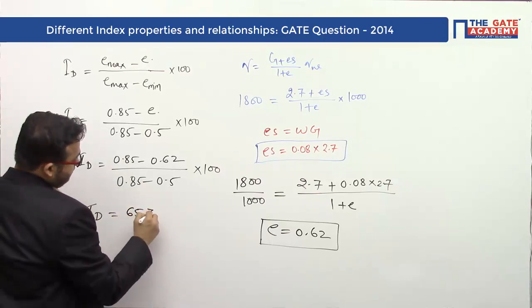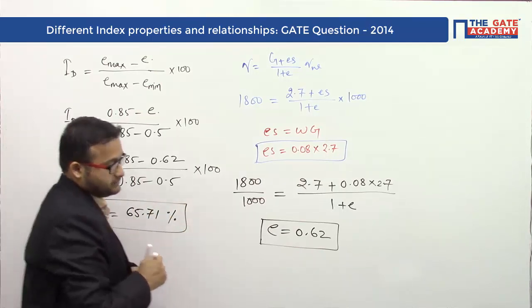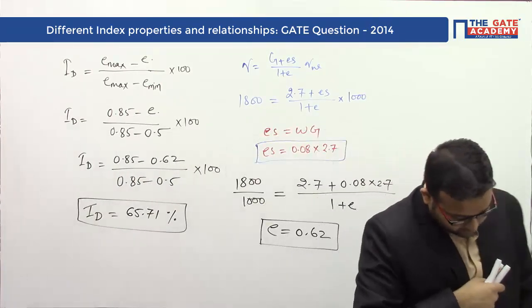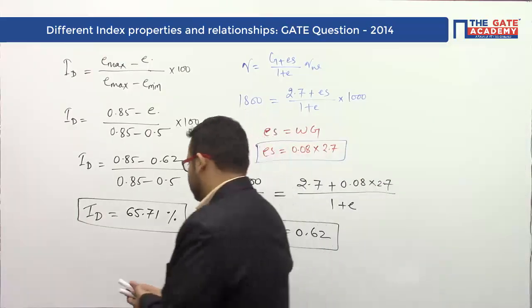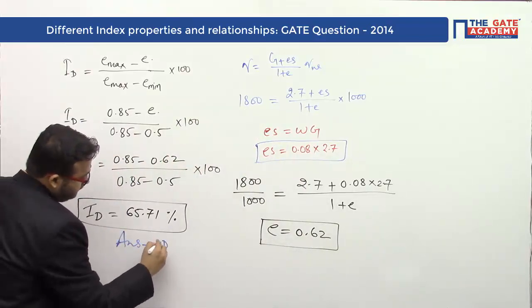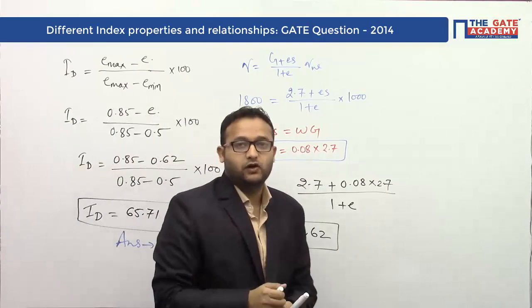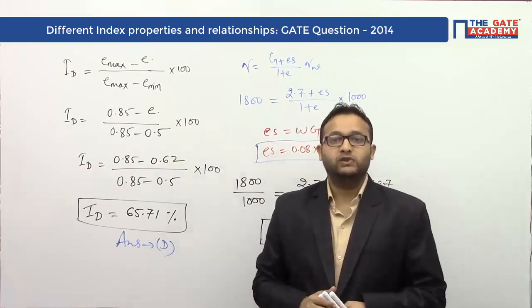65.71% value of density index. Four options are given, so we can say option D is the correct answer for this problem. Answer is option D: 65.71, the value of relative density, which is also called density index. Thank you.